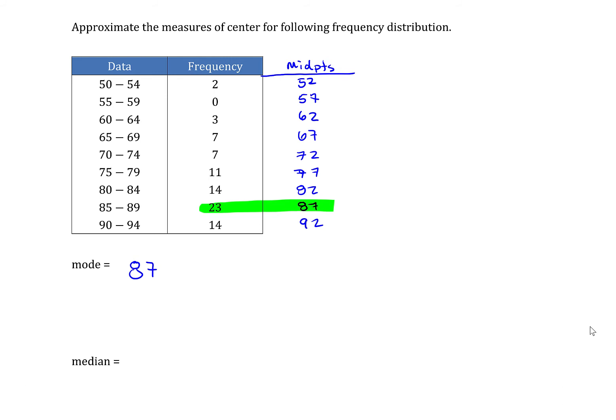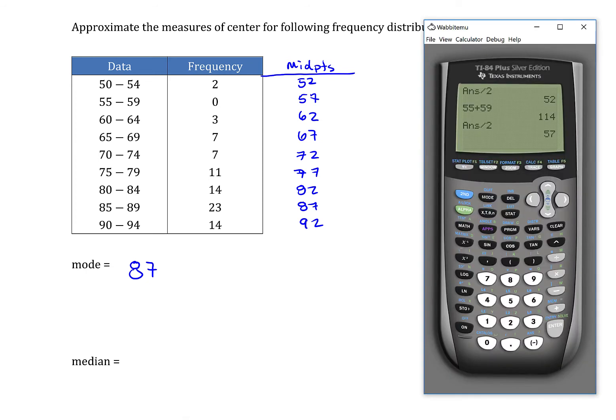Now, the median and the mean, that's going to be a little bit trickier. We're going to use the calculator to come up with those. In order to get the calculator to do a median and a mean of a frequency distribution, what we need to do is go into the list editor. So press STAT and then ENTER, and that'll take you into the list editor.